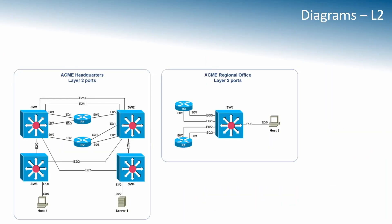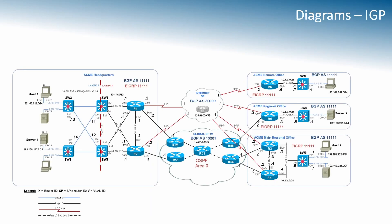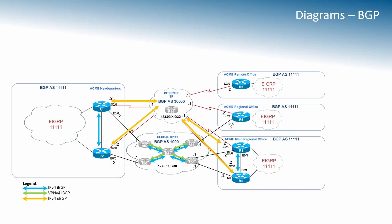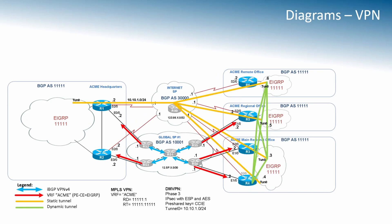Make sure you select the diagrams that give you the information needed to answer a specific question — don't open all available diagrams. For example, the Layer 2 diagram won't show Layer 3 information; there's a separate diagram for that. You'll also have an IGP diagram for Layer 3 information, a BGP diagram focused on transport, and a VPNv4 diagram. Select the diagram that is most relevant to the specific question you're answering.